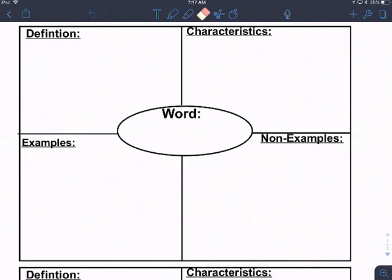We're going to work on a Frayer model example for the word square. This is going to give you a good example of how you can use this model to understand some of our math vocabulary words on your own.